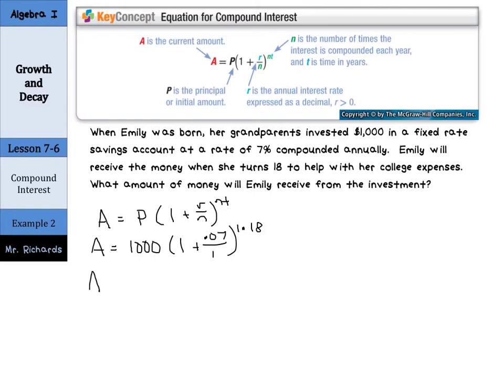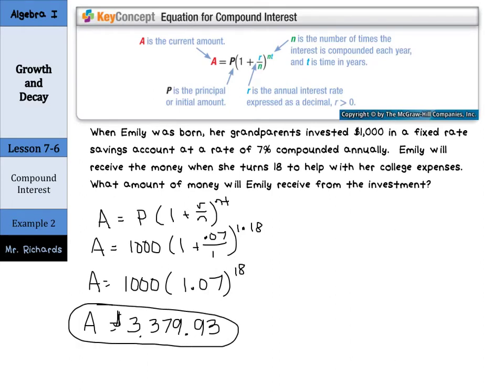So as we work to solve this problem now, we have 1,000 still on the outset of our parentheses. The 0.07 divided by 1 is just 0.07 plus 1 is 1.07. 1 times 18 is just 18. And when you take 1 and 7 hundredths to the 18th and multiply it by 1,000, you get $3,379.93. Not bad for just putting $1,000 in the bank.